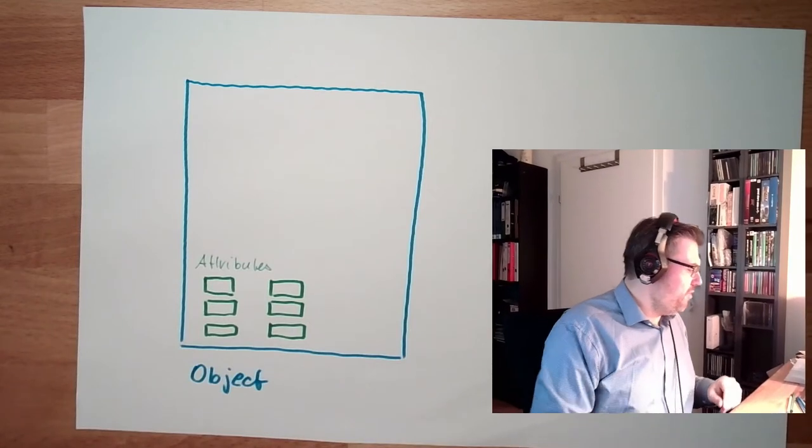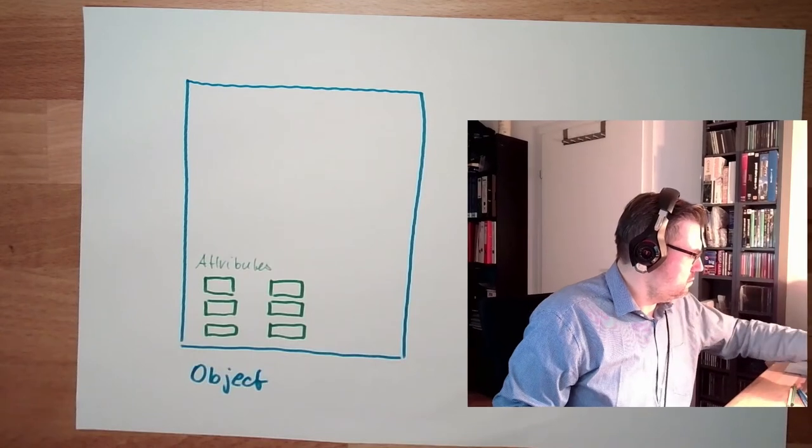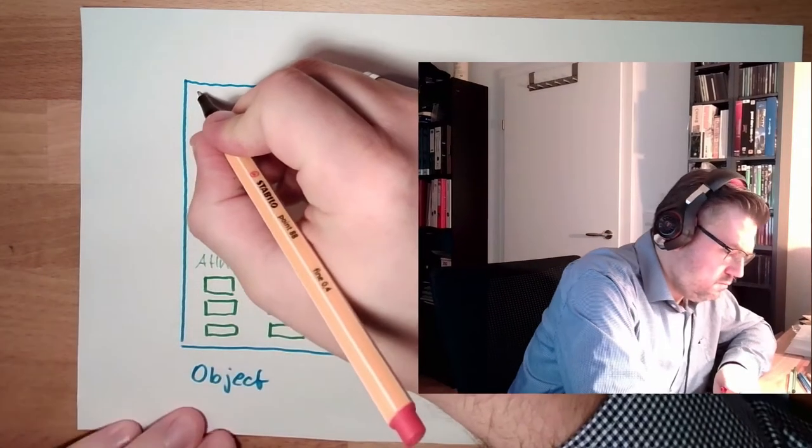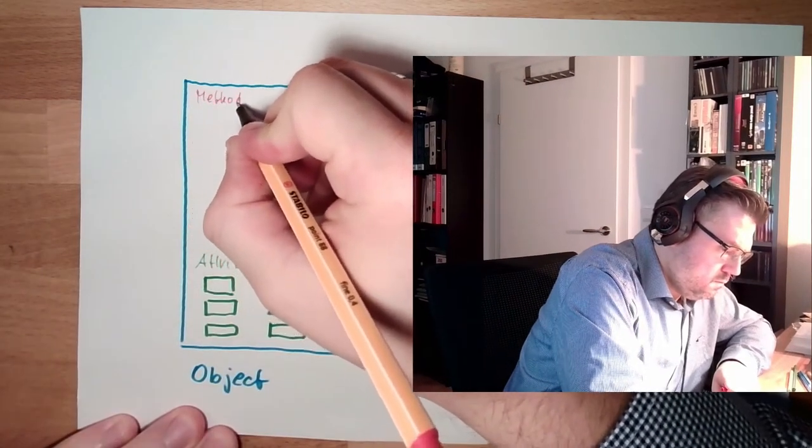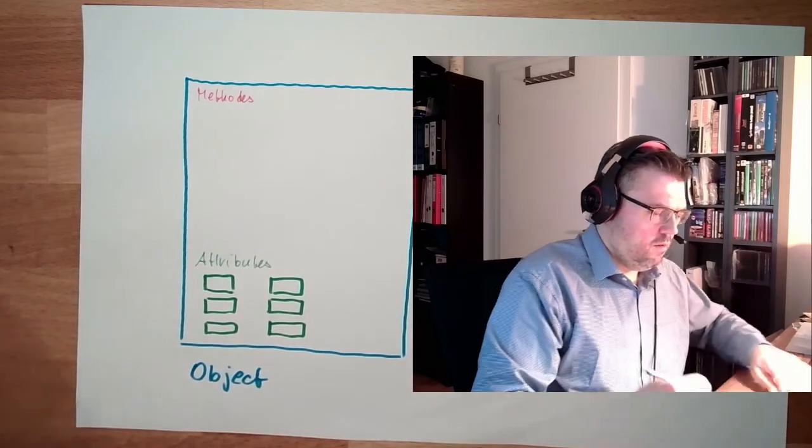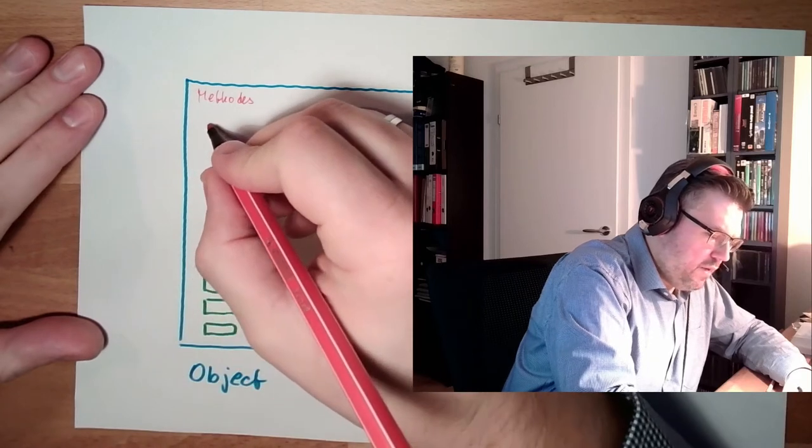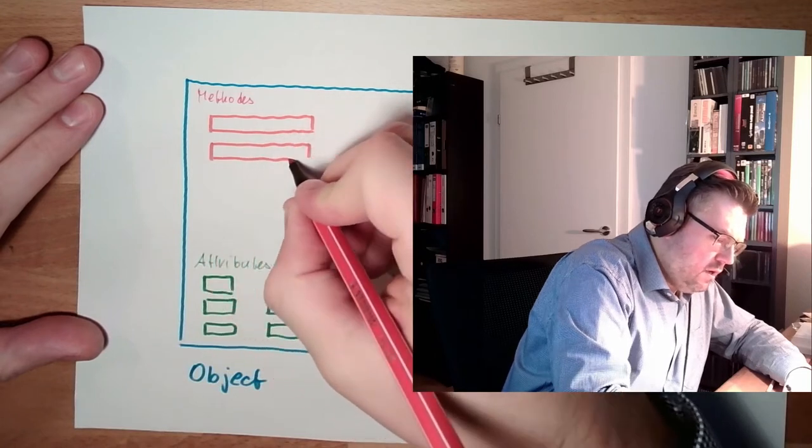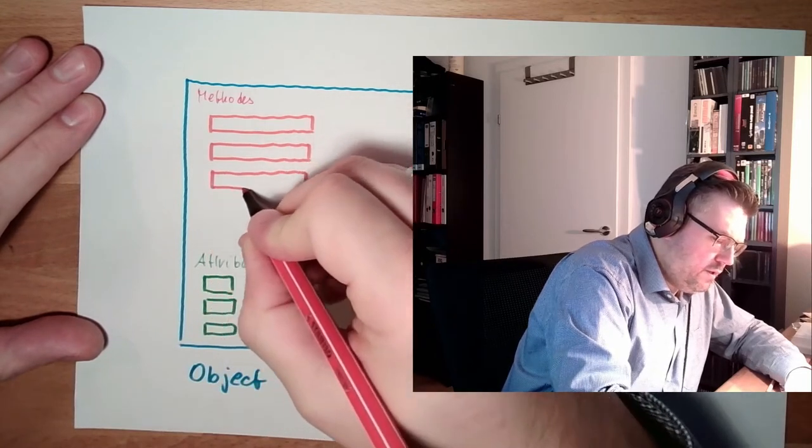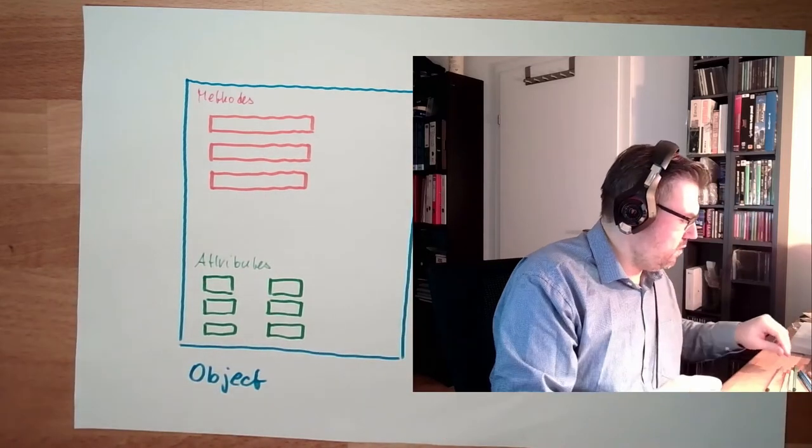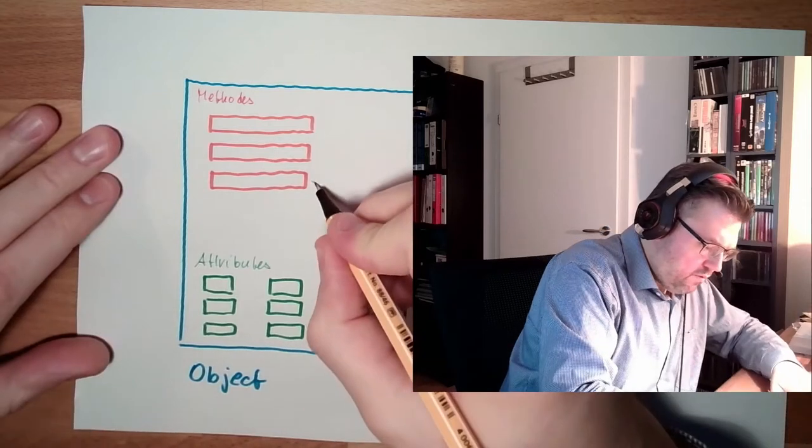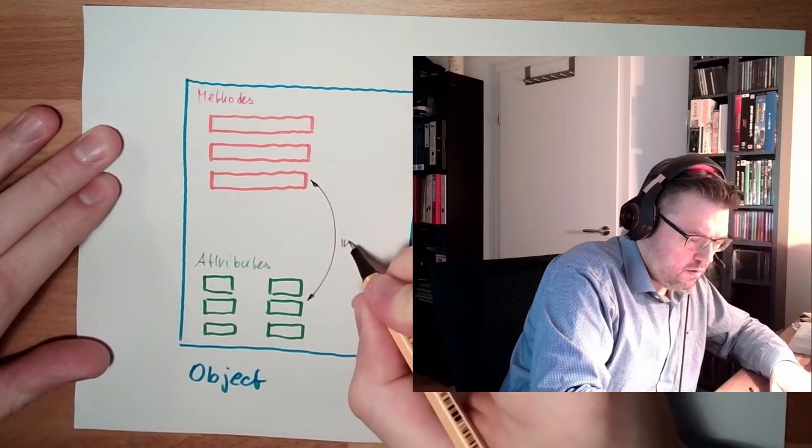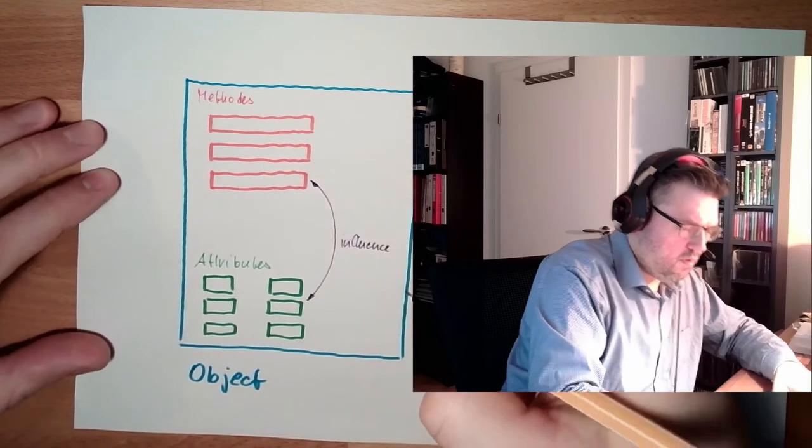And then there are so-called methods. These are functions mainly, there is also a number of methods. And these methods are usually used to influence the attributes somehow. So these methods are influencing the attributes, and maybe give them back. And that's it.